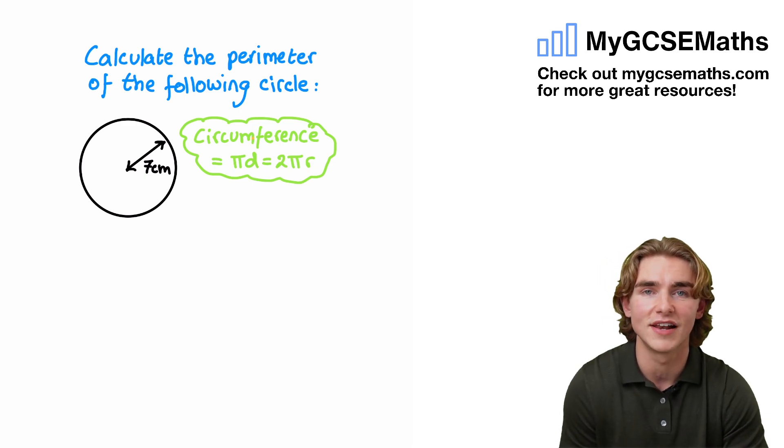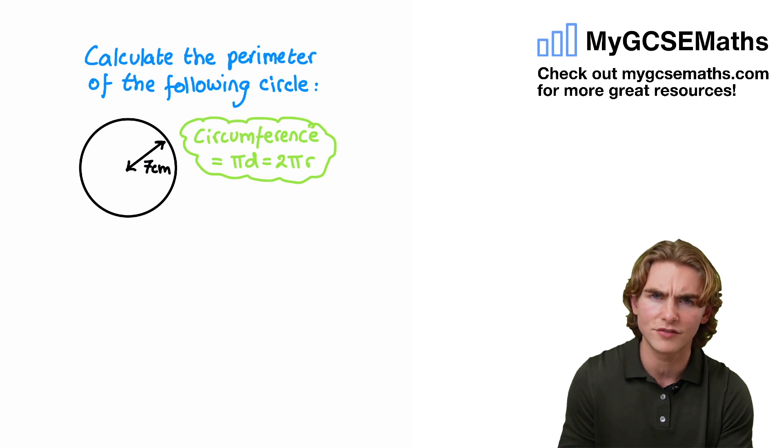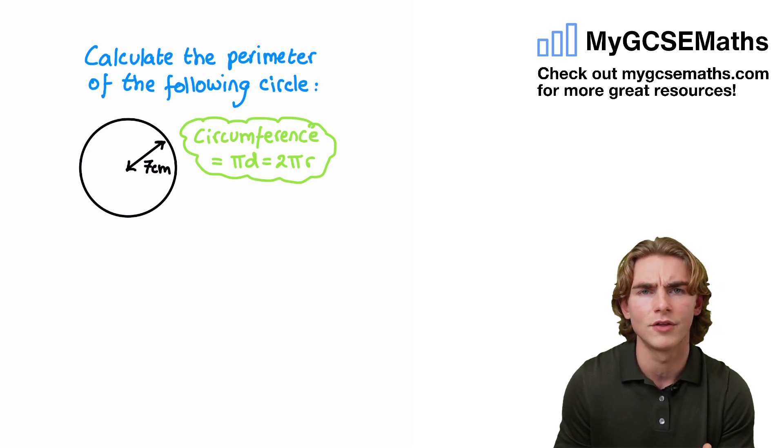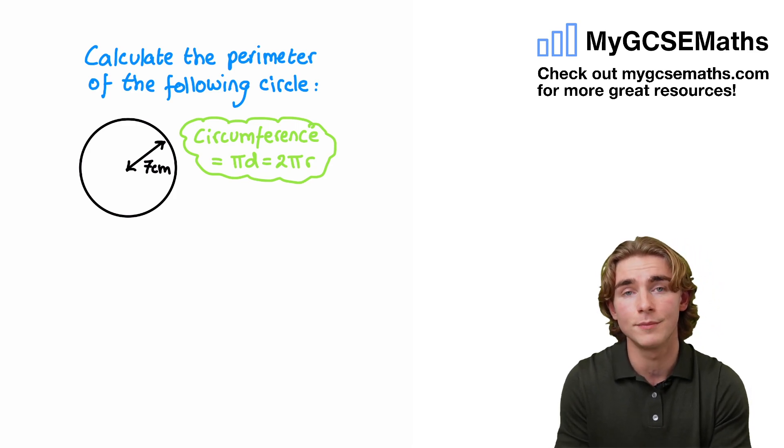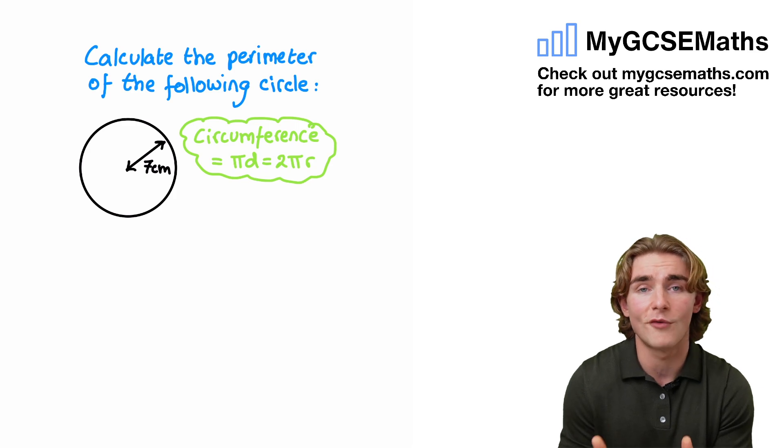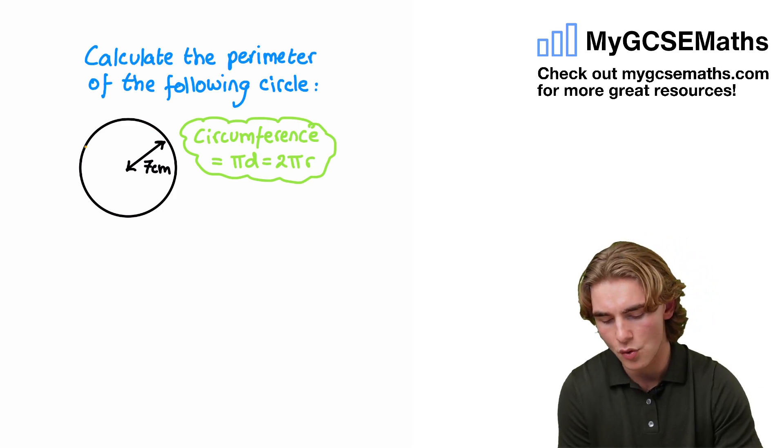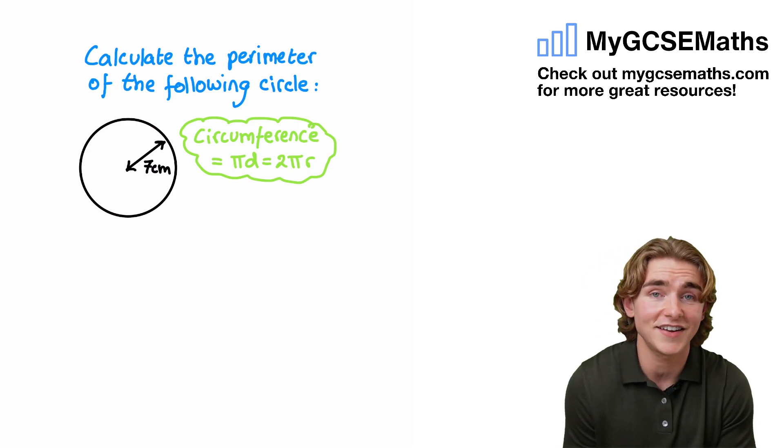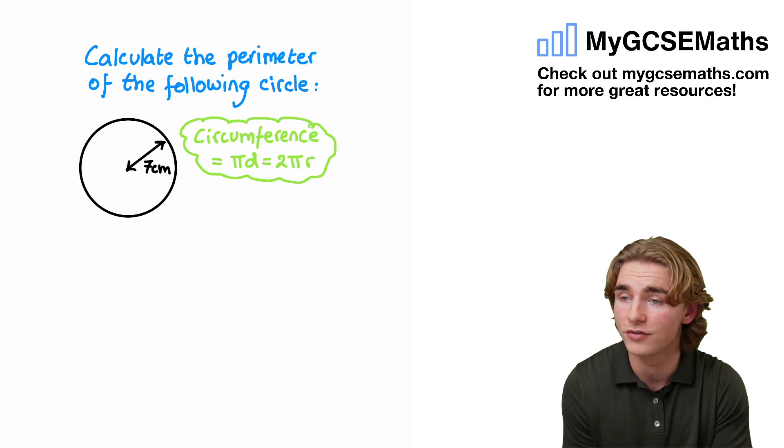Now, this actually trips a lot of people up because as soon as they think of the perimeter of a circle, they think, wow, how do I work out the perimeter without realizing that the perimeter and the circumference are actually the same thing? The circumference is length all the way around the circle, which is actually the definition of the perimeter of a circle.